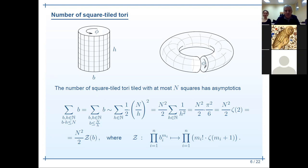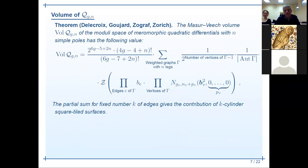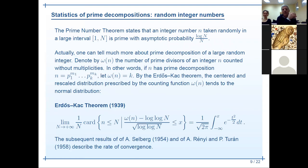The analogous statement holds for more general square-tile surfaces. There is a formula for the asymptotics of the number of square-tile surfaces of genus g with n points having cone angle π. The only thing to remember is that it is a sum over all possible stable graphs, and for each stable graph there is an expression in terms of intersection numbers of psi classes.